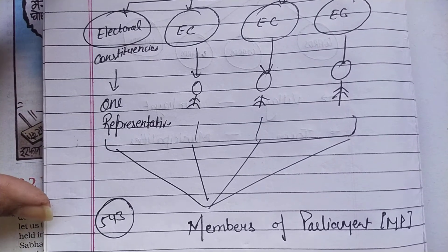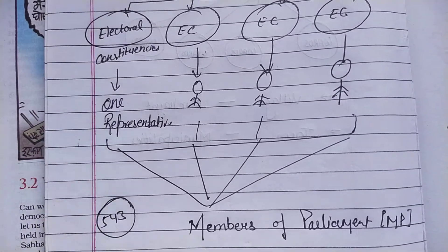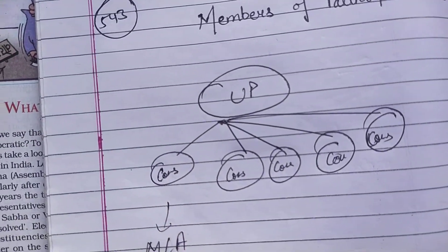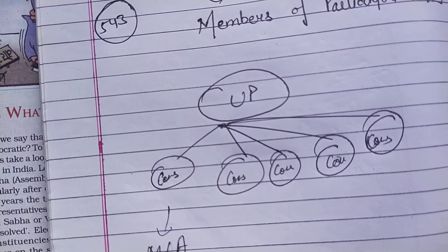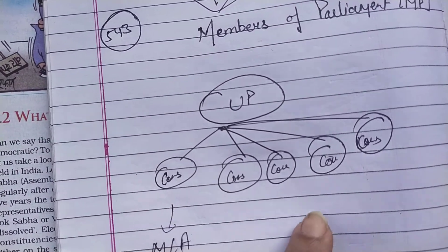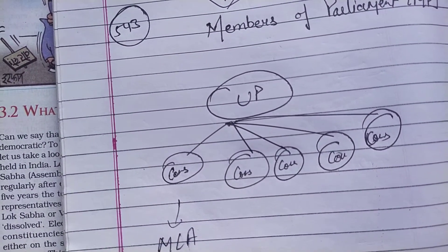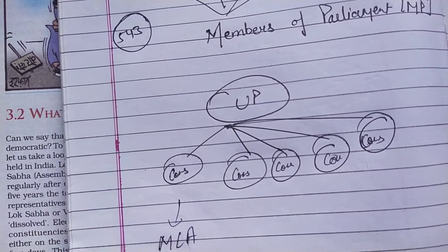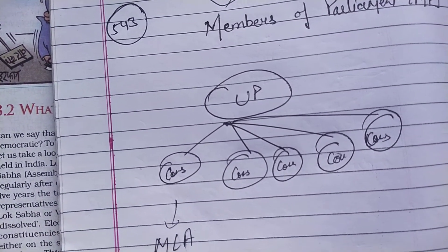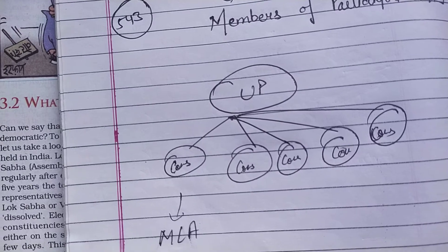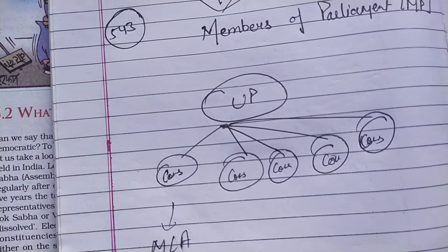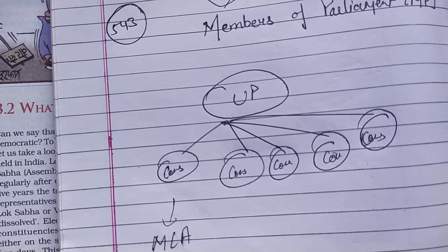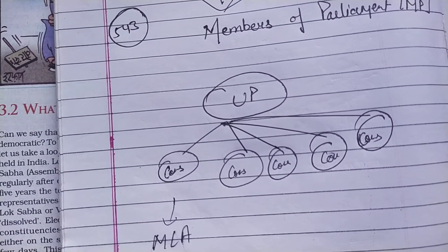That is the system at the country level for electing MPs. Now if we come to the state level — taking the example of Uttar Pradesh — from a particular state we have assembly constituencies. From each constituency we elect different members, and these elected representatives are known as MLAs, that is, Members of Legislative Assembly.